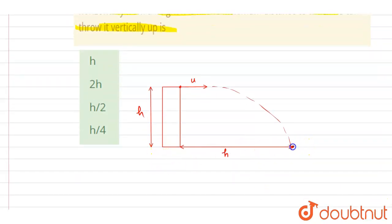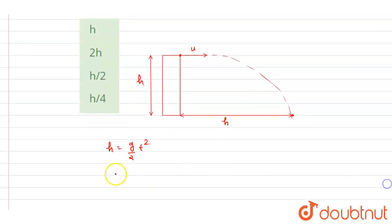So if you see here, what will be the time taken to strike the ground? So if I write down, it is h equals half g t square. So the time will be equals to under root 2h by g.